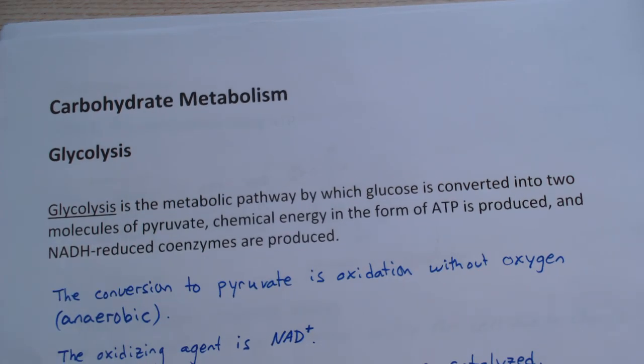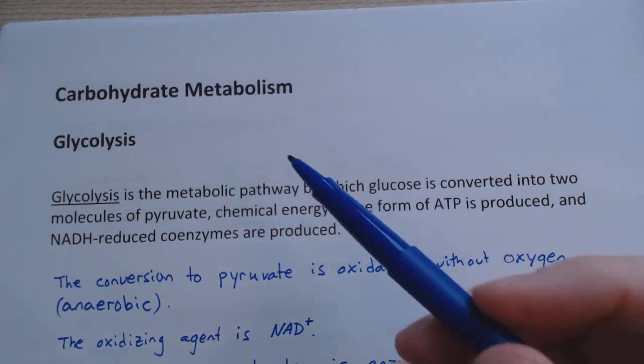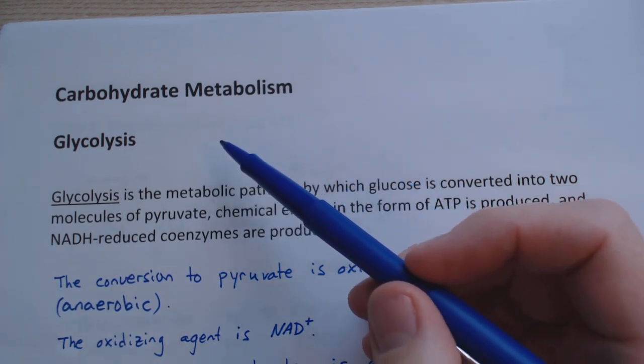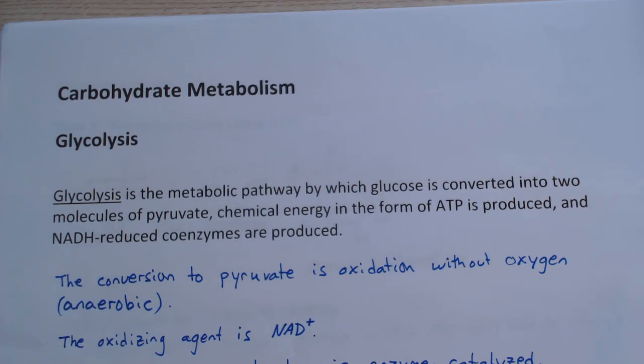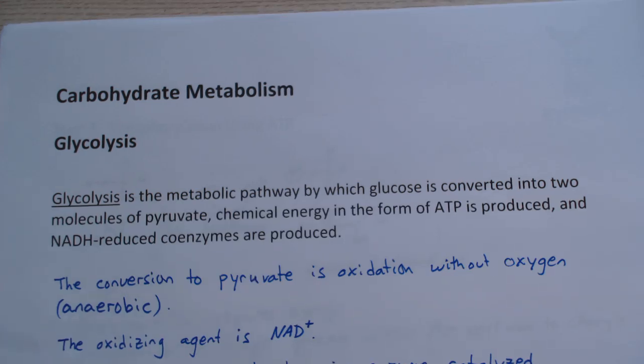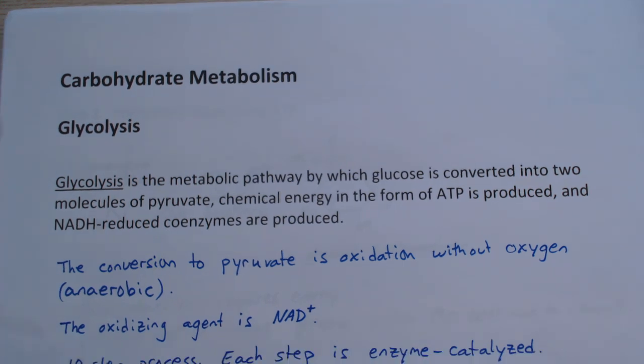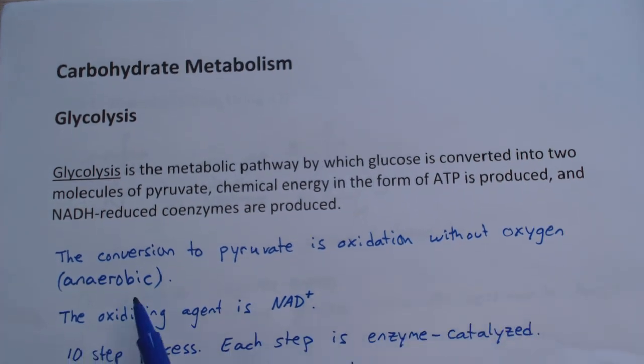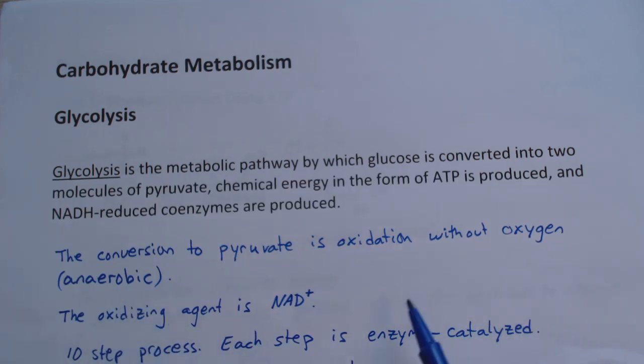We have carbohydrate metabolism. We talked about metabolism in general, but now we're going to talk about carbohydrate metabolism - how we break down carbohydrates. One of the main ways of doing that is through glycolysis. Glycolysis is the metabolic pathway by which glucose is converted into two molecules of pyruvate. Chemical energy in the form of ATP is produced, and NADH reduced coenzymes are also produced.